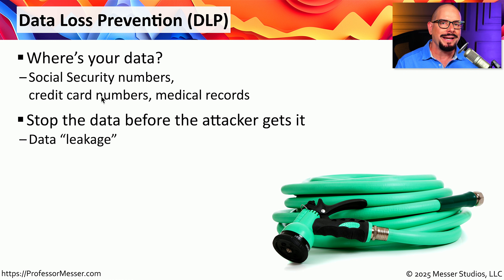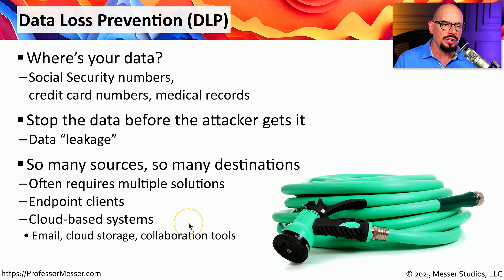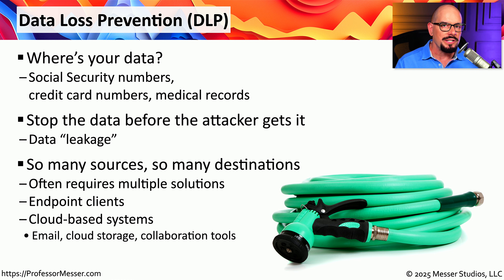With DLP, we can identify sensitive information and set policies on how this information should be transferred from one place to another. Most organizations use multiple types of data loss prevention — there might be clients on the endpoints, DLP installed on cloud-based systems, and DLP functionality built into the email server or even the firewall. This means information that is properly secured can be transferred to the appropriate resource, and information sent in the clear across the network is stopped before it gets into the hands of someone who should not be viewing it.